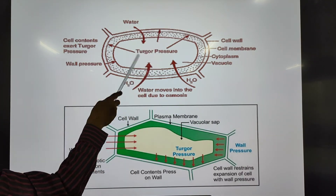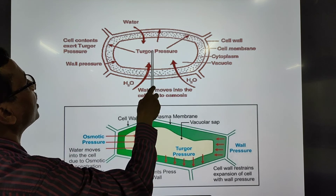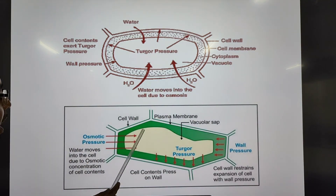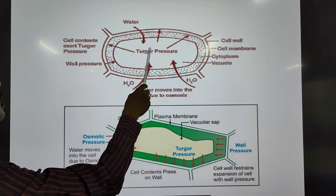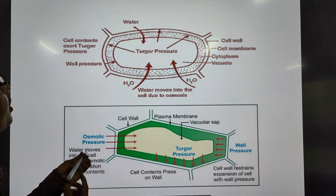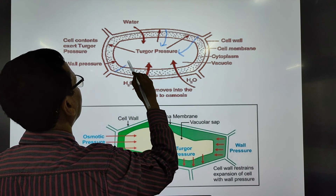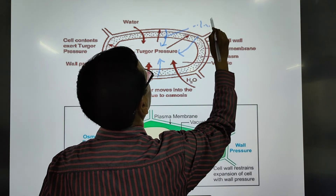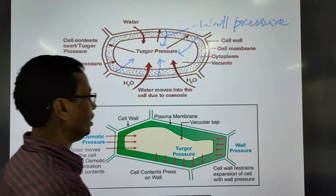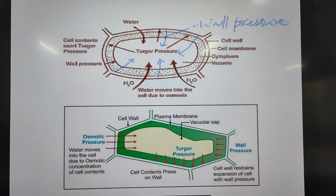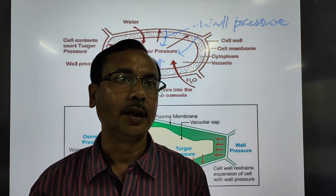Turgor pressure is the pressure exerted by the inside contents of the cell on the cell wall. At the same time, an opposite pressure is exerted by the cell wall on the contents of the cell — that is called wall pressure. The wall pressure acts inward, and this is how the cell wall enables the cell to manage itself despite changes in external environmental conditions.